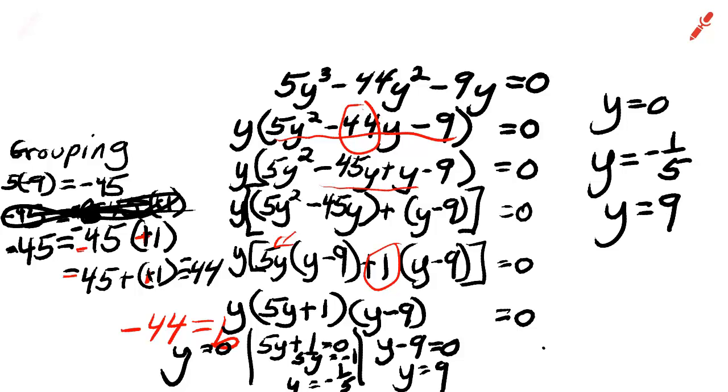And we're going to be encountering a theorem soon. The theorem says that when your highest power is 3, you're going to have three solutions. When your highest power is 4, you have 4 solutions. And we're about to meet that.